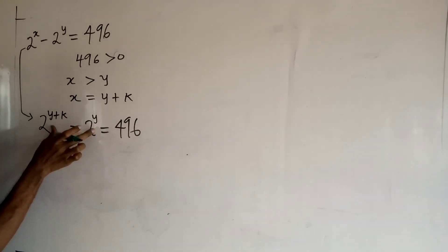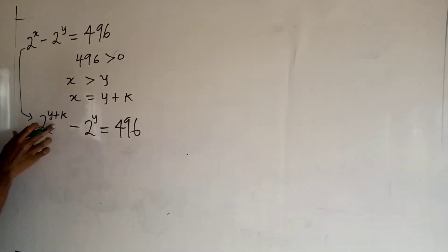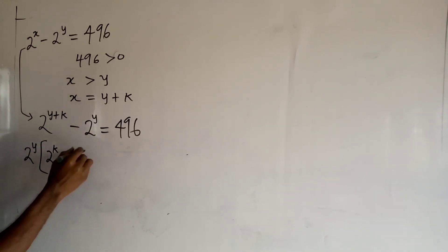Now in this equation we can say that 2 to the power y is a common term in the left-hand side, so I want to factor it out. So I have 2 to the power y into this guy divided by this guy, we'll have 2 to the power k, then minus 2 to the power y divided by 2 to the power y, of course it is just one.